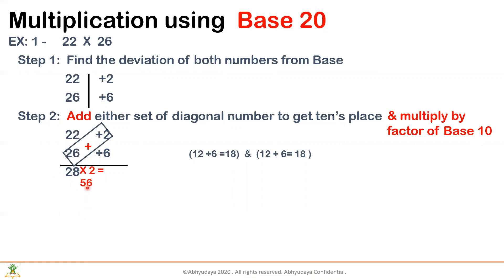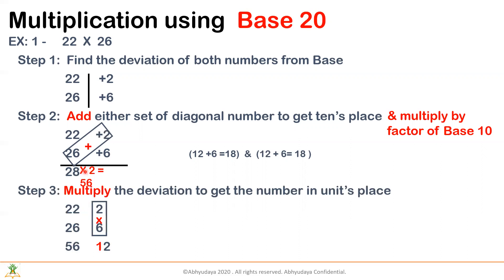Now you continue as earlier where you write 56 here instead of 28. The same step as the previous time: you multiply 2 into 6, which gives you 12. Now, 12 is a two-digit number, and the base has only one zero in it. So I cannot write 12 directly. This has to be only one digit, so the tens place will get carried over. 57, 2. So 572 is the answer.